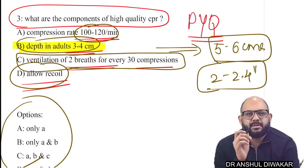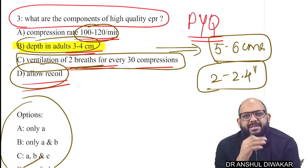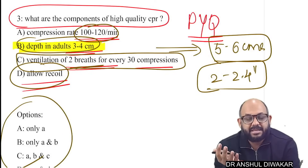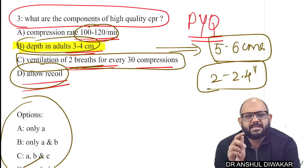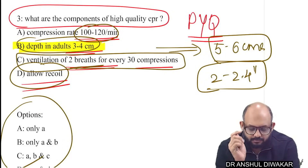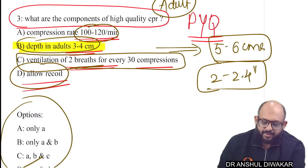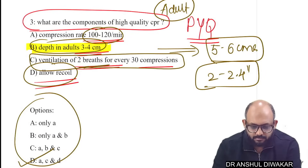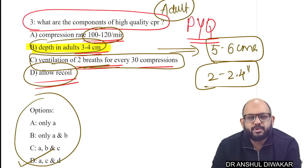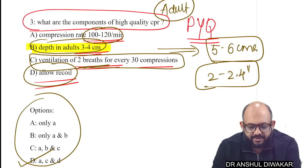In the previous PYQ the option listed 5–6 cm, whereas here it referenced 1 breath every 2 to 3 seconds, or 20–25 breaths per minute. The adult patient was specified, so there was no confusion about the patient type. I have told you every time during CPR discussion that the 5 do's and don'ts of high-quality CPR is probably the most important slide in the entire CPR topic, and that is why we revisit CPR every single time.